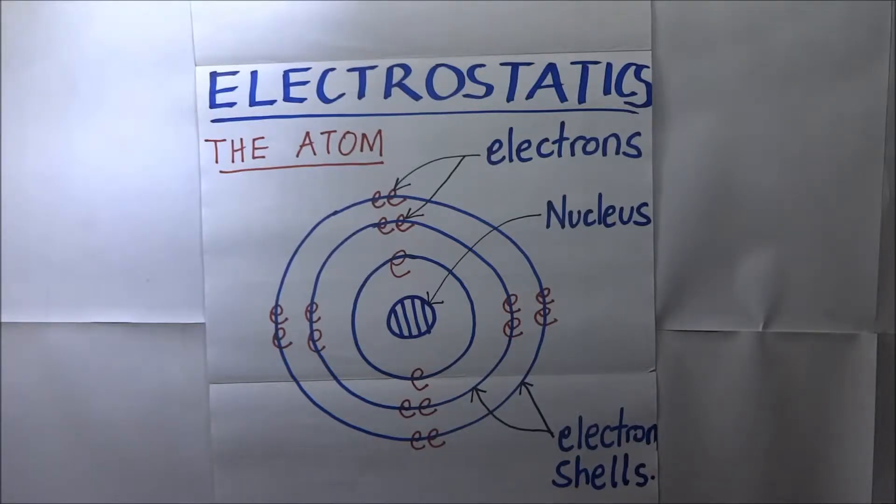So what is an atom? An atom is simply the simplest invisible particle of an element. It consists of a nucleus which is surrounded by electrons in their respective electron shells as shown in the diagram.